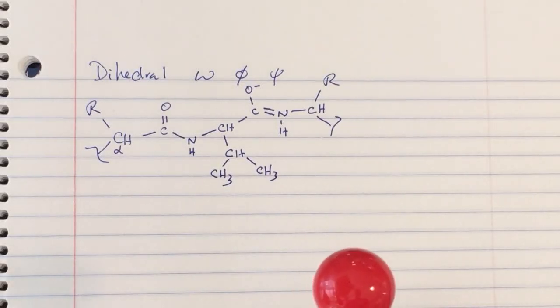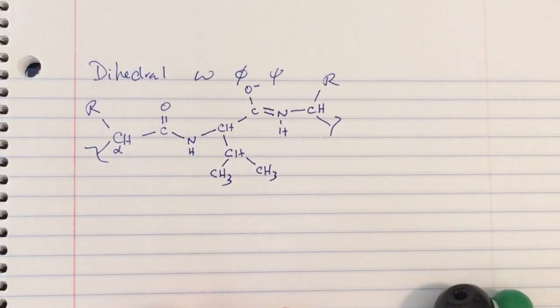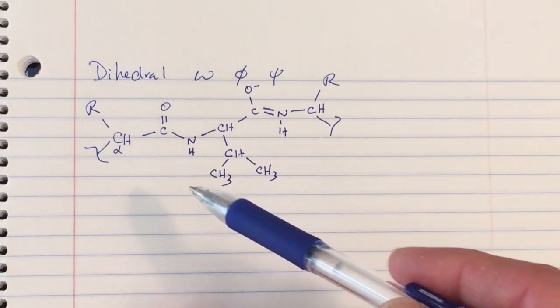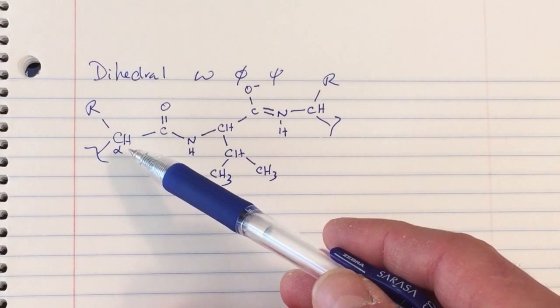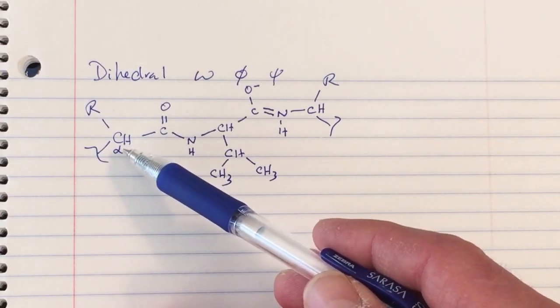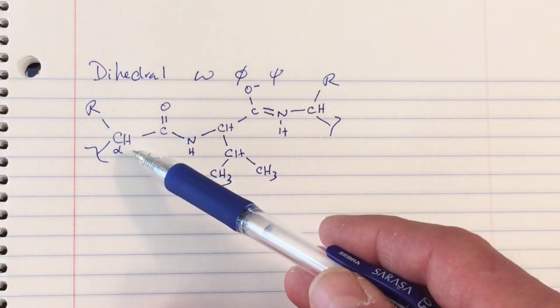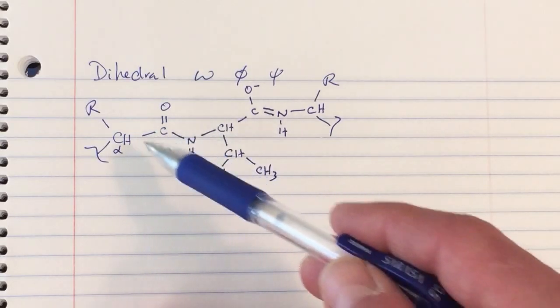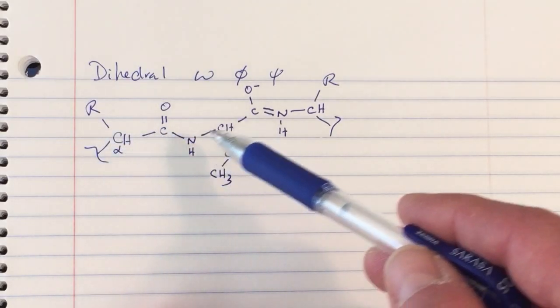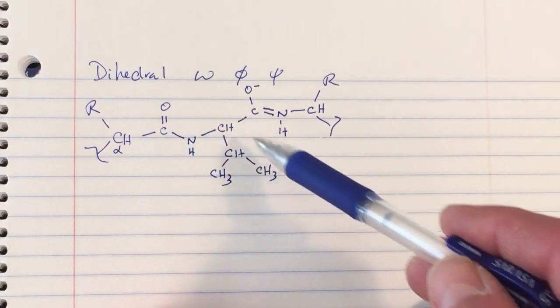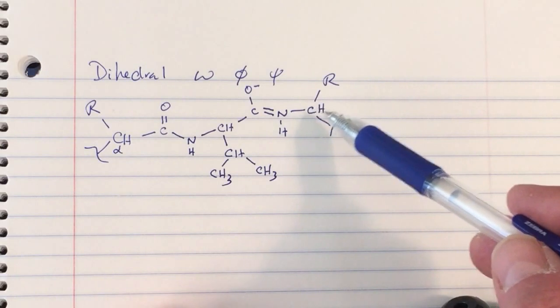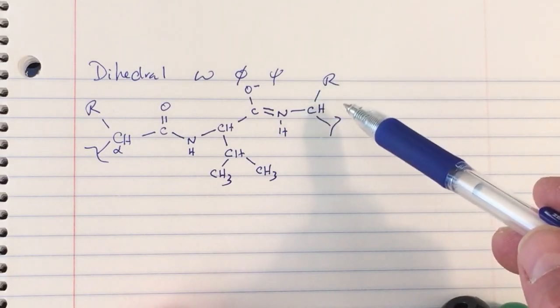We're continuing our discussion about dihedral angles in the context of polypeptide chains. I started by drawing out a connection between alpha carbons and their side chains connected by peptide linkages. This is a general amino acid residue, here we have valine, and then a second peptide linkage connected to a third general amino acid with an R group.